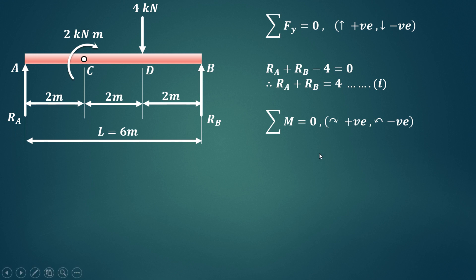The second condition of equilibrium is summation of moments equals 0. Clockwise moments are considered positive and anticlockwise moments are considered negative. Taking moments about point A, the reaction Rb creates an anticlockwise moment towards A. The perpendicular distance from B to A is 6, so it is minus Rb into 6.